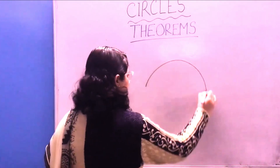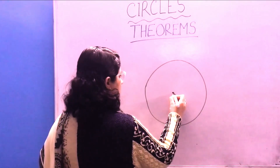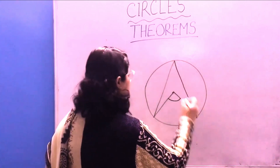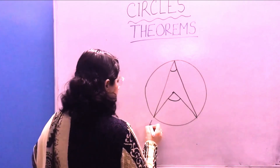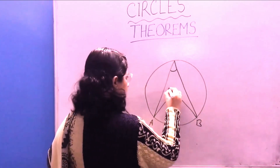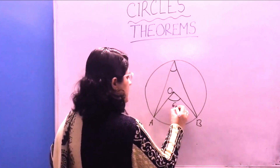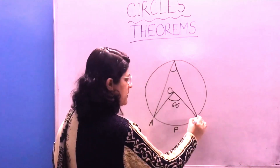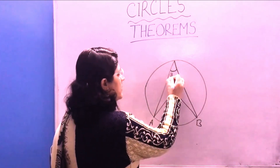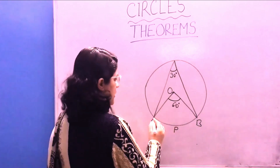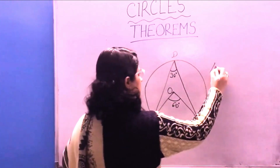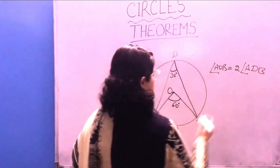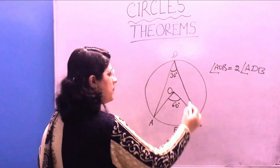The next theorem is: the angle subtended by an arc at the center of the circle is double the angle subtended by the same arc at the remaining part of the circle. For example, suppose arc AB subtends angle AOB of 60 degrees at the center. Then the angle made by the same arc at any point on the circumference is half of 60 degrees, which is 30 degrees. So angle AOB is double angle ADB — AOB is 60 degrees and ADB is 30 degrees.